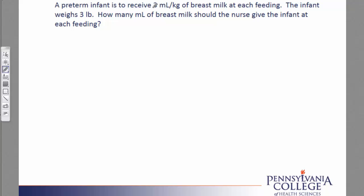Underlining key information, we have the amount that the patient should receive based on the patient's weight. We're given the patient's weight. The question is asking us how many milliliters, so we know our final answer should have a label of milliliters.